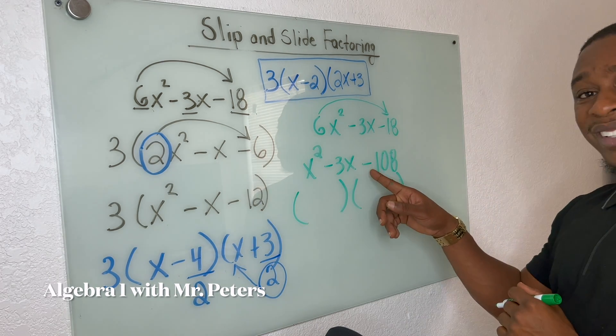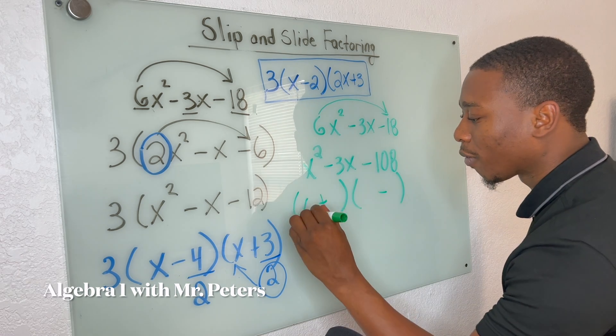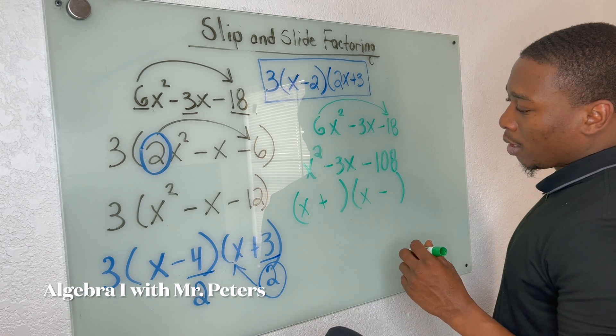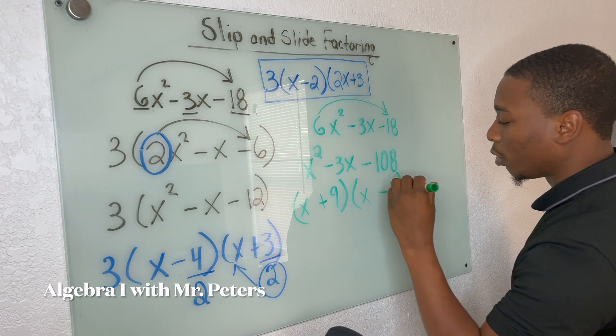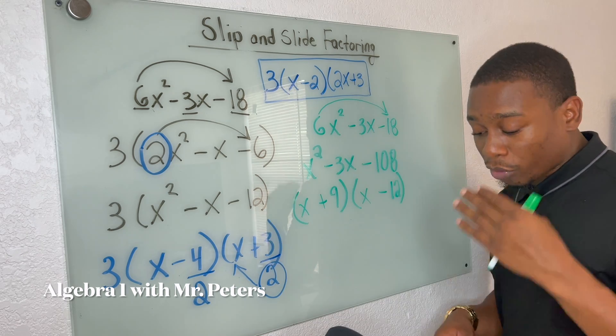And we know our signs are going to be opposite. So one's positive, one's negative. So the numbers that we are going to use are going to be positive nine and negative 12. That'll give us the 108 when we multiply, negative three when we add.